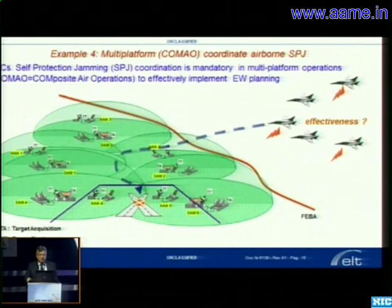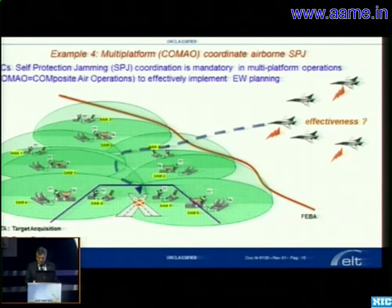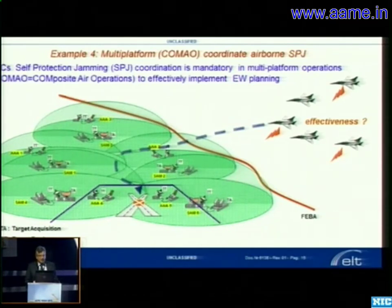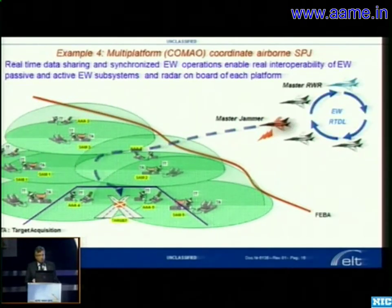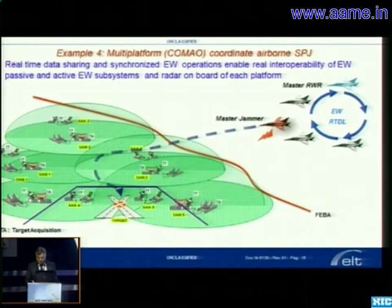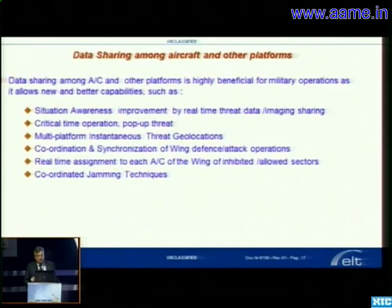Similarly, whenever you have to imply a composite air operation — a wing going into attack that has to be separated — the real-time data link provides coordination of what the wing has to do, in a short time, about how to jam most of the threats on the ground, as well as how to work together in the same operation.